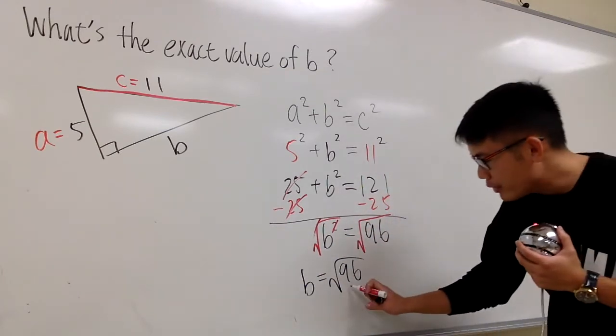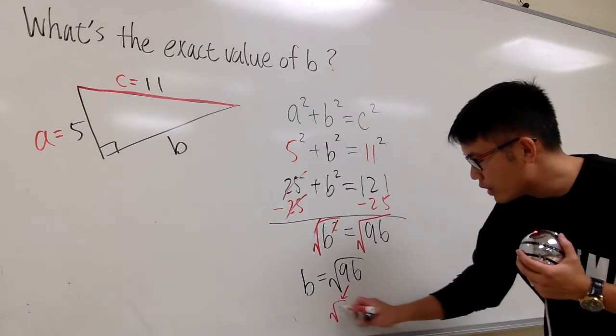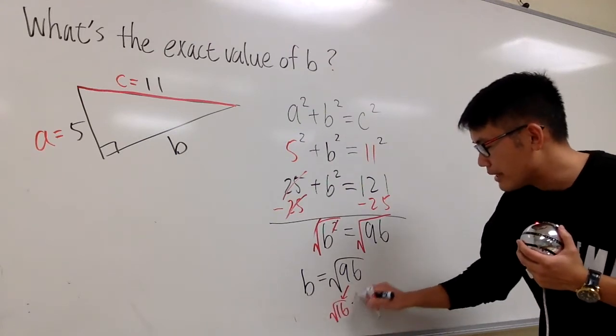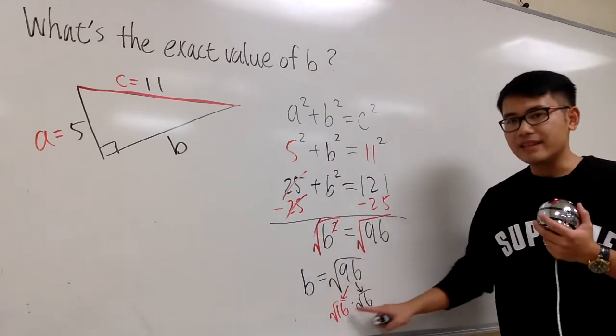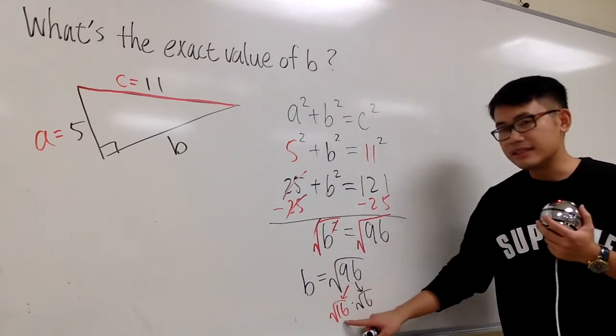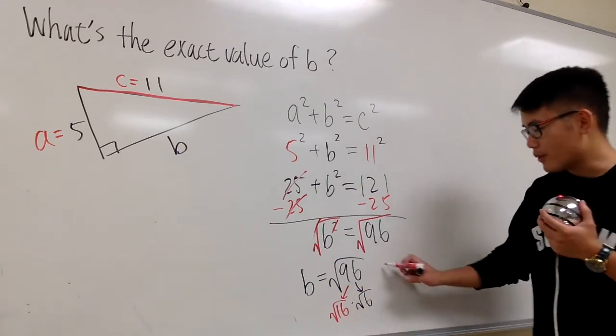Right here, I'm going to break this down as √16, and we'll multiply this by √6. 16 times 6 will give us 96, and 16 is a perfect square. So you know, we can simplify this.